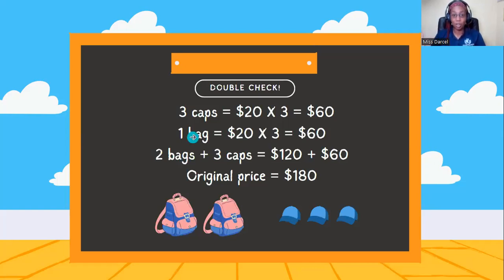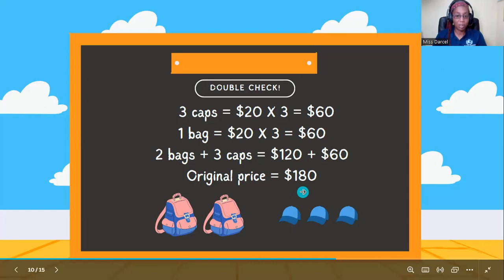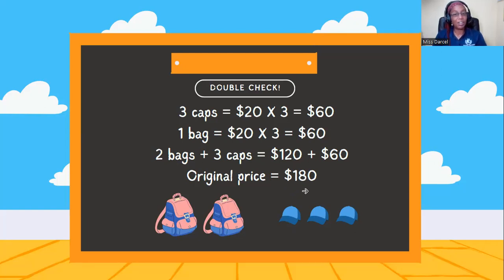So we could double check if we're not sure. Always double check your work. So three cups, $20 by three. That's $60. One bag, remember it's three times the cost of one cup. So one bag is going to cost the same $60 basically because it's 20 by three. So two bags would be $120. Three cups would be $60. So we get back the original price, which is $180. Two bags, three cups, $180. All right. On to the next one. We're getting a little more difficult. Closer to the exam.